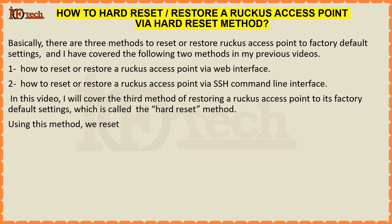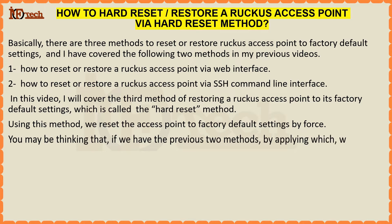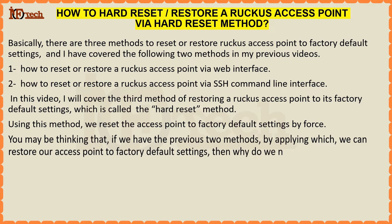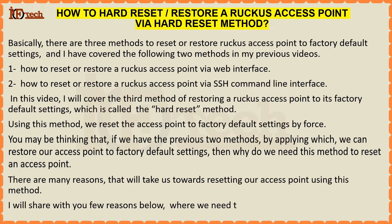Using this method, we reset the access point to factory default settings by force. You may be thinking that if we have the previous two methods by applying which we can restore our access point to factory default settings, then why do we need this method? There are many reasons that will take us towards resetting our access point using this method. I will share with you a few reasons below where we will need this method to restore our Ruckus access point to factory default settings.